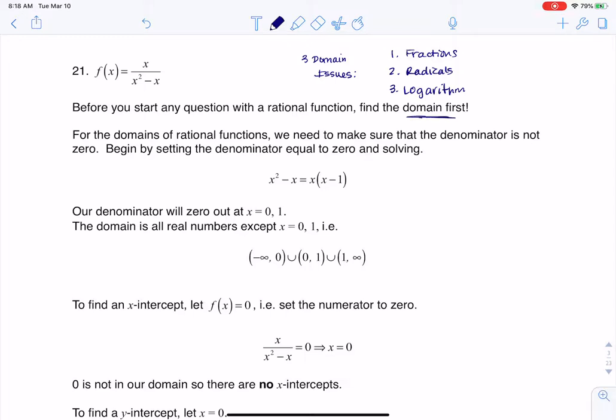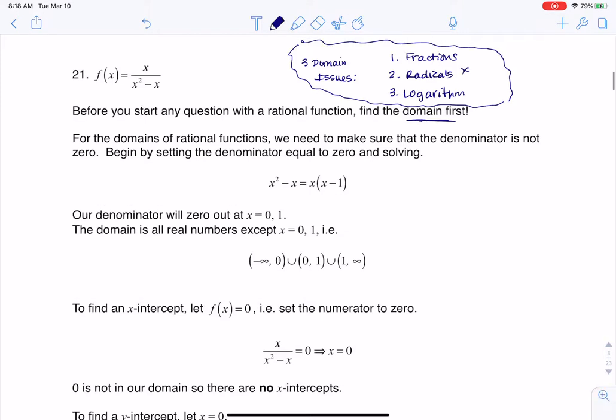We should always find the domain of any rational function before we get going. The three domain issues we run into over and over again in math are when we have fractions, radicals, and logarithms. I don't have a radical here and I don't have a logarithm, but I do have a fraction. So we need to account for when the denominator equals zero.